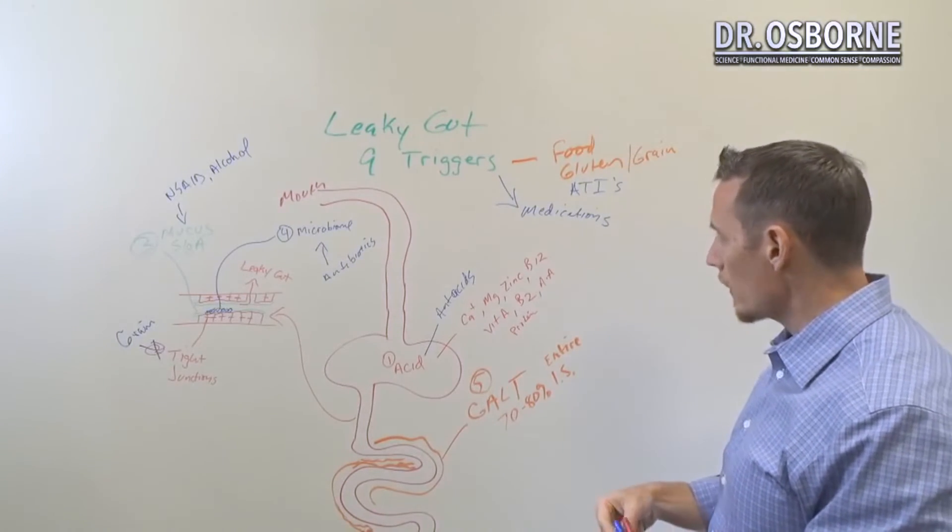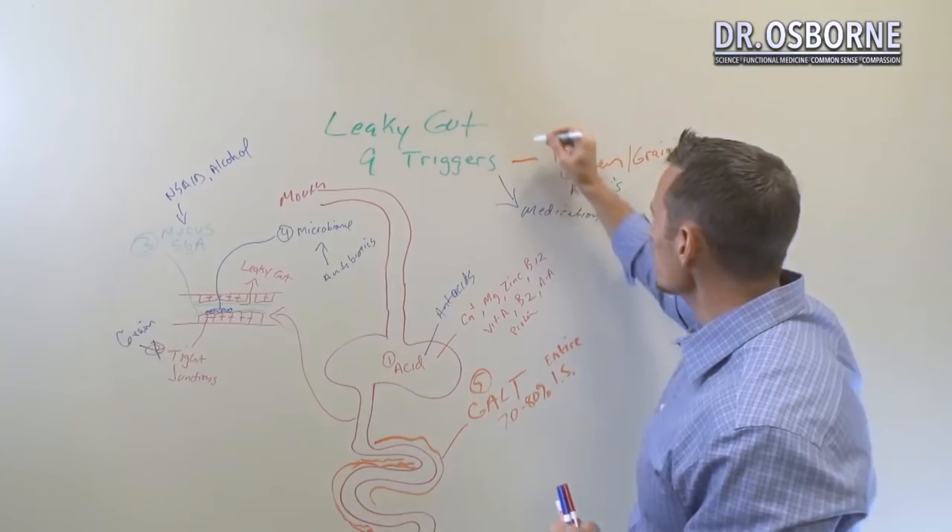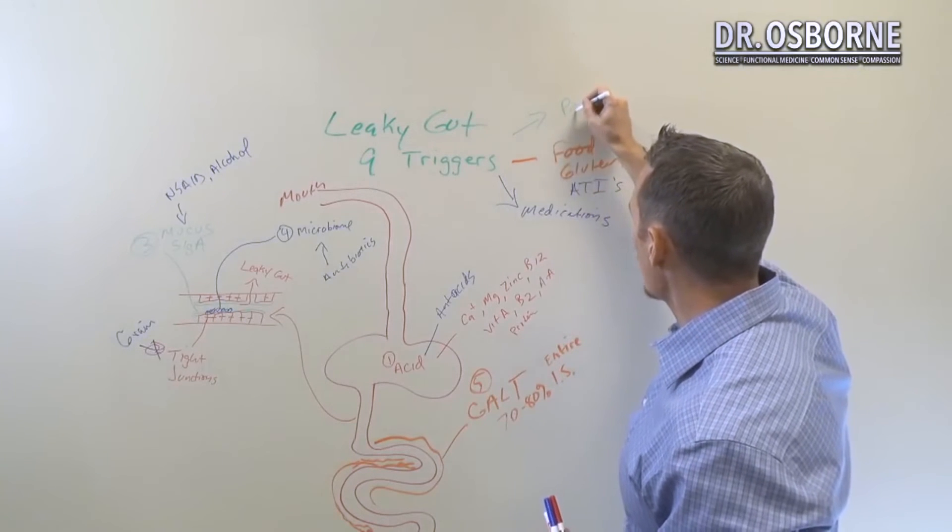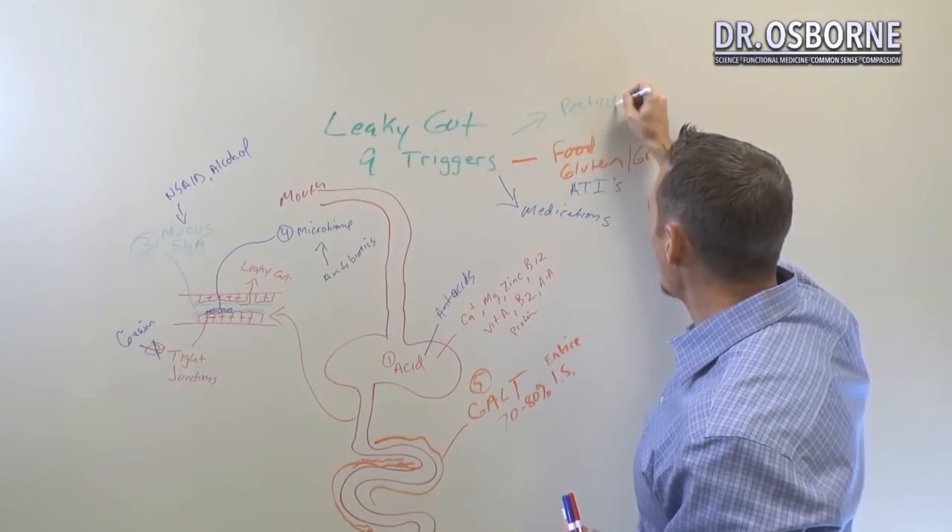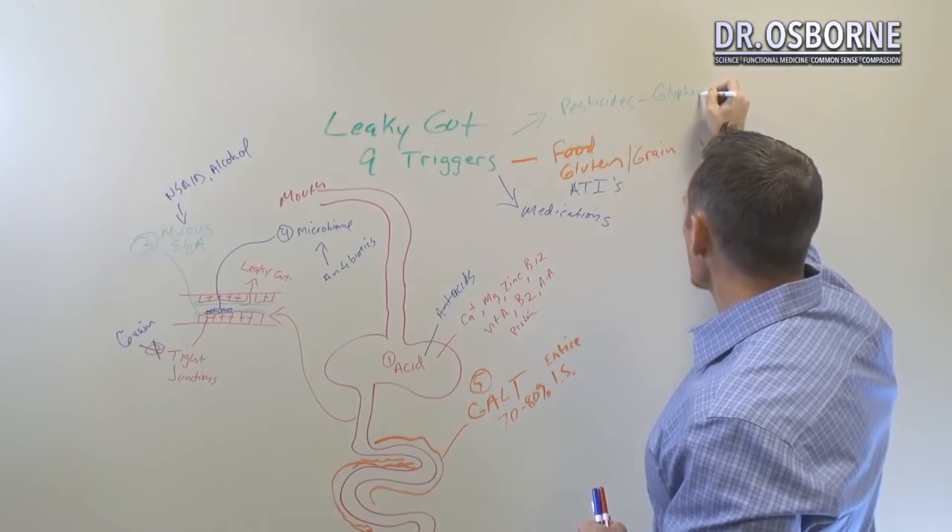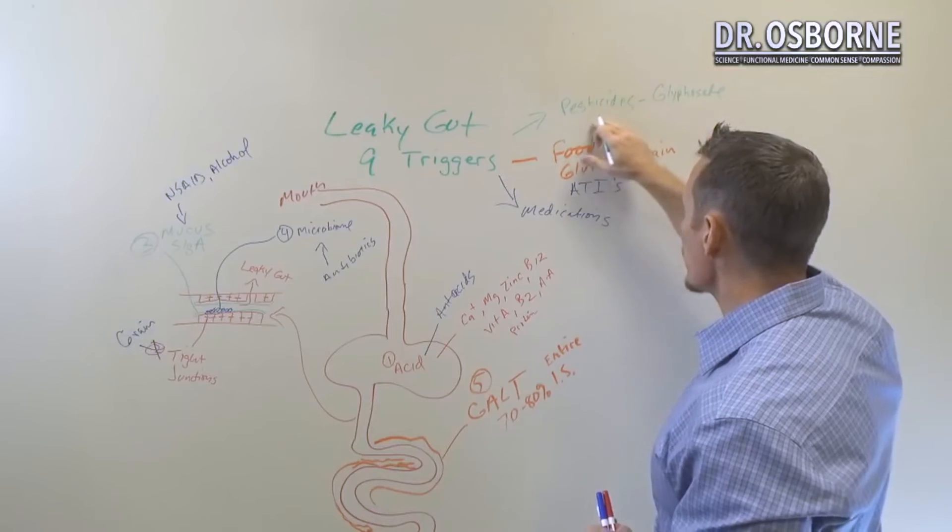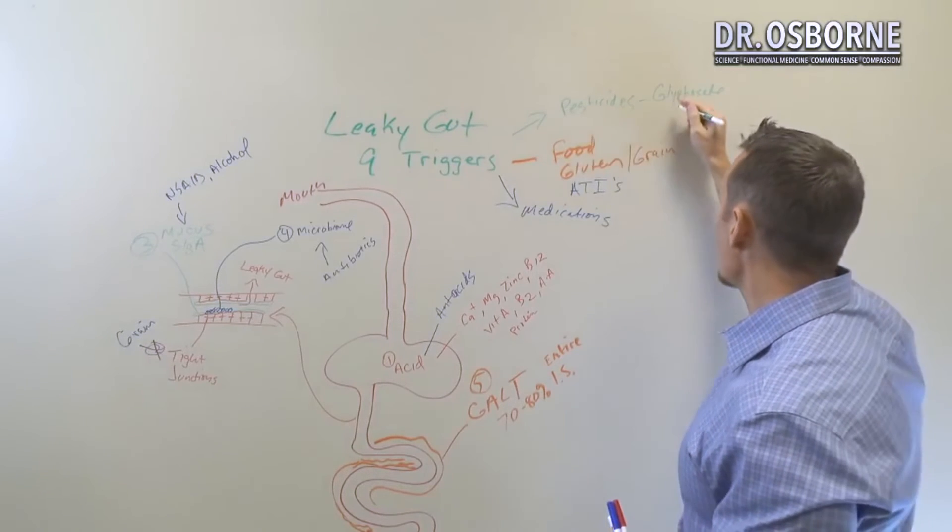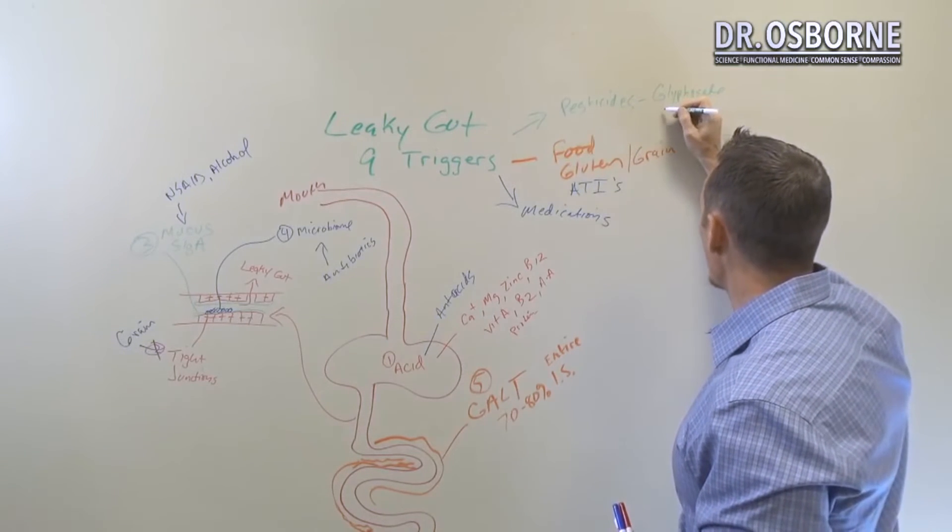So other things that we know can cause a leaky gut. Pesticides, and this has been known for quite a while, but there's more than a lot of people are on glyphosate right now as being a major issue and it's a major problem. There's no doubt about it, but there are other pesticides as well.